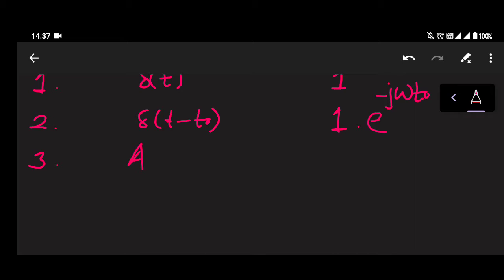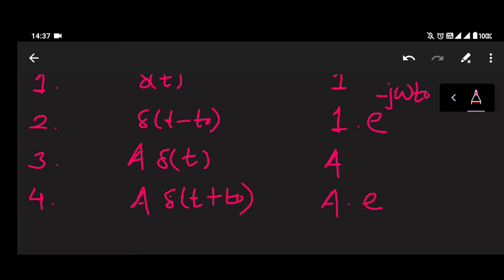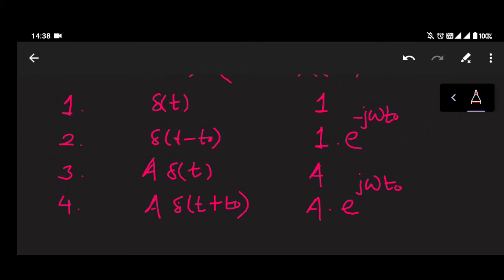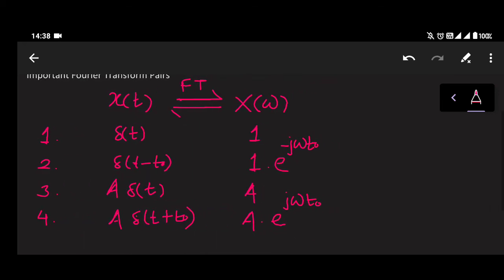Third, if you multiply δ(t) by a, the Fourier transform will be a. Fourth, if you have a·δ(t + t₀), then the Fourier transform will be a multiplied by e^(jωt₀). So if the time shift is δ(t − t₀) it will be e^(−jωt₀), and if the signal is δ(t + t₀) it is e^(jωt₀). These are the Fourier transform pairs related to the signal δ(t).